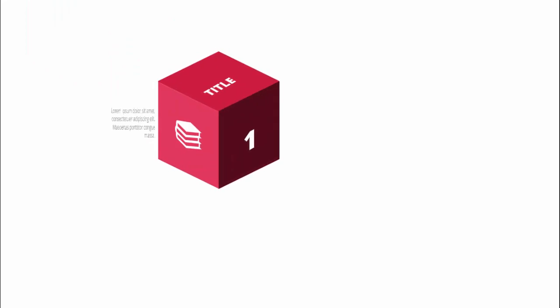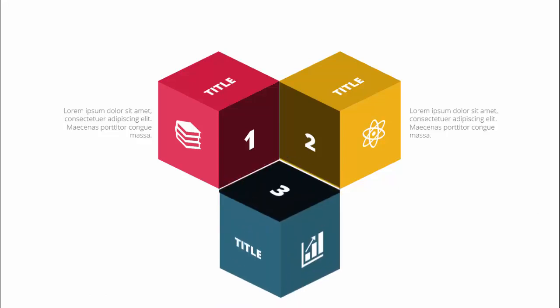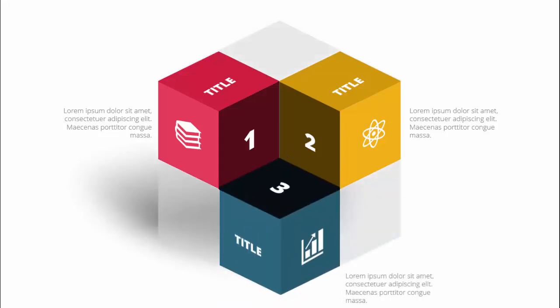In today's tutorial I'm going to show you how to create a hexagon shape infographic slide in PowerPoint. When I click, the first cube will appear — I've added the title, the option, some icons, and some detailed text. With different color combinations, the second and third options appear, filled with hexagon shapes, and I've added a shadow effect.